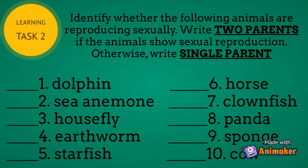Learning task number 2: identify whether the following animals are reproduced sexually. Write '2 parents' if the animals show sexual reproduction; otherwise, write 'single parent.'